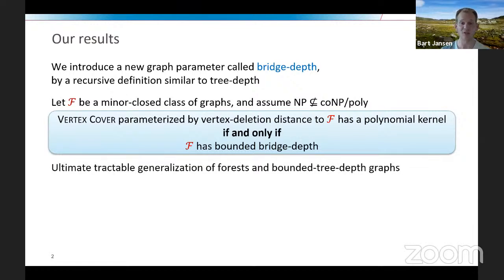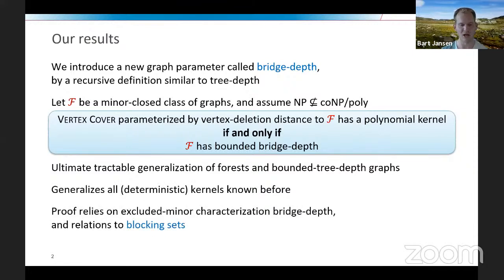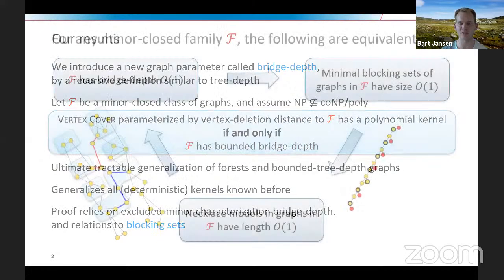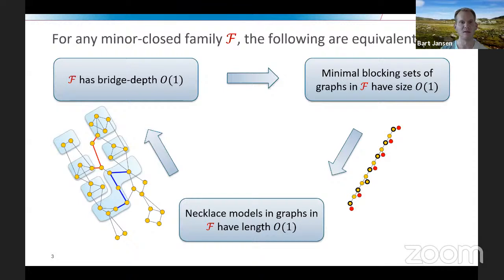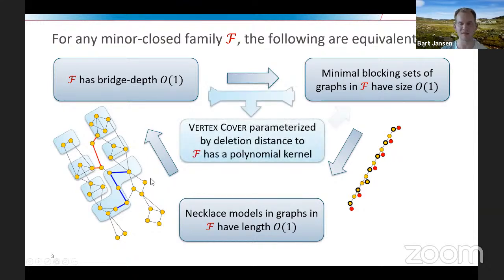Using bridge depth, the paper proves that for a minor-closed class of graphs, under the standard complexity assumption, vertex cover parameterized by deletion distance to a family F has a polynomial kernel if and only if the family F has bounded bridge depth. This can be thought of as the ultimate tractable generalization, subsuming known kernels for forests and bounded tree-depth graph classes. The proof relies on graph-theoretic concepts around bridge depth and its relations to blocking sets.